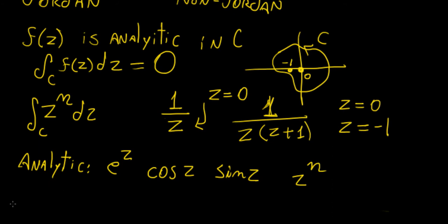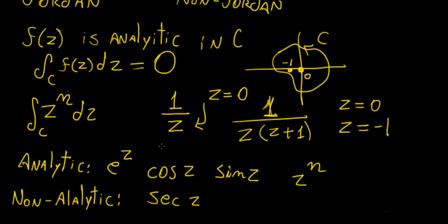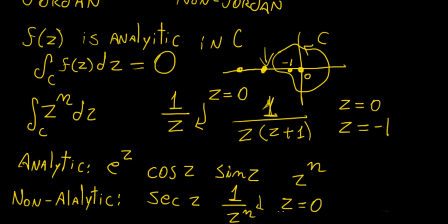What about non-analytic functions? So non-analytic, as long as they have a singularity that lies within the curve. An example would be sec of z, because sec is just 1 over cosine z, and cosine becomes zero at any half-integer multiples of pi — so we'd have an infinite number of singularities. Another example is 1 over z^n, which has a singularity at the origin, causing problems if the curve goes around that point.